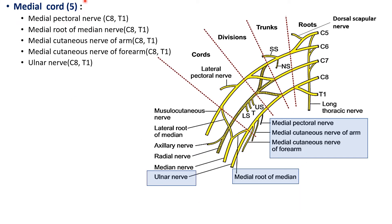From the medial cord, five branches arise. Four of these nerves have 'medial' as their first word: medial pectoral nerve, medial root of median nerve, medial cutaneous nerve of arm, and medial cutaneous nerve of forearm. The fifth important nerve is the ulnar nerve — it arises from the medial cord because it runs on the medial side, as the ulnar bone is on the medial side of the forearm.